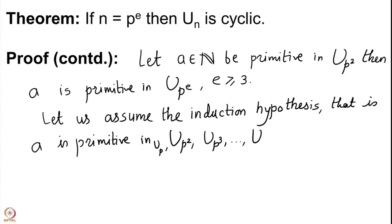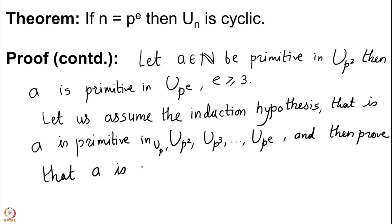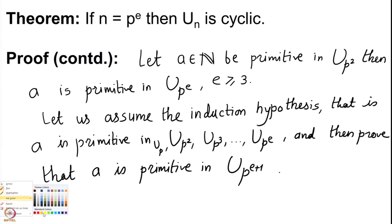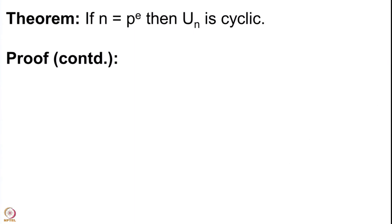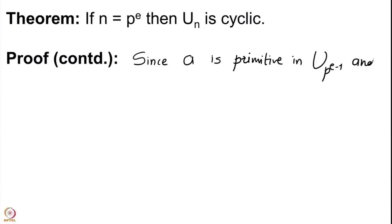The induction hypothesis is that a is primitive in U(p²), U(p³), and so on, up to U(p^e), and then we prove that a is primitive in U(p^(e+1)). This is our plan — we start with the induction hypothesis that our element remains primitive for all these groups and prove that it remains primitive in the next group as well. Since a is primitive in U(p^(e-1)) and U(p^e), we get the following statements.